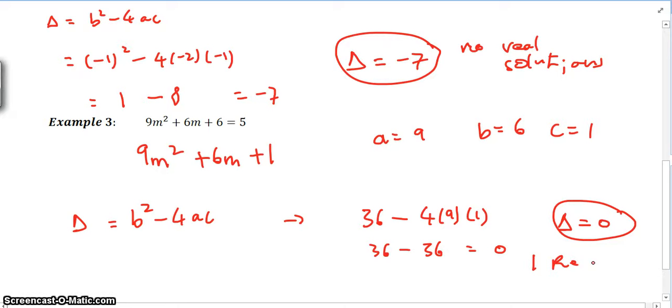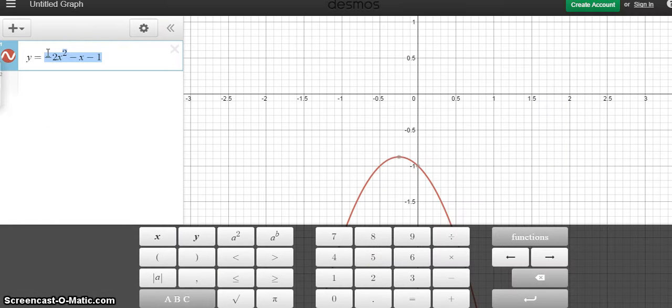That means we should have one real solution. So we need to be careful with what we're graphing on the actual calculator. You need to graph this form and not the form that's not rearranged. So let's have a look. 9m squared plus 6m plus 1.